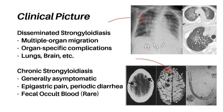Chronic strongyloidiasis is generally asymptomatic, but in those that do present symptoms, it is usually complaints of epigastric pain, constipation, diarrhea, among others. Patients may even present with fecal occult blood in rare cases.